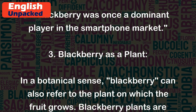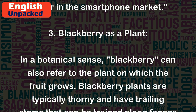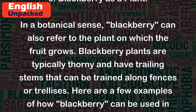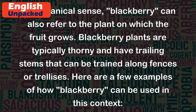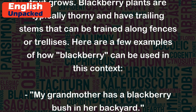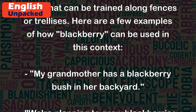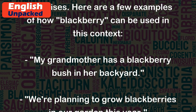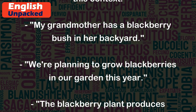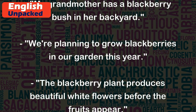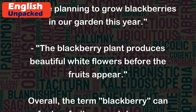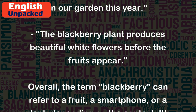Blackberry as a plant. In a botanical sense, 'blackberry' can also refer to the plant on which the fruit grows. Blackberry plants are typically thorny and have trailing stems that can be trained along fences or trellises. Examples: 'My grandmother has a blackberry bush in her backyard.' 'We're planning to grow blackberries in our garden this year.' 'The blackberry plant produces beautiful white flowers before the fruits appear.'